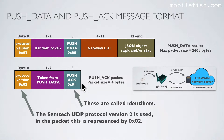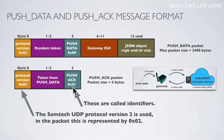This is the push acknowledge packet message format. The packet size is 4 bytes. Byte 0 contains protocol version 2. Byte 1 and 2 contain the token from push data — so this token is the same as the push data token. Byte 3 contains an identifier; value 1 means push acknowledge.